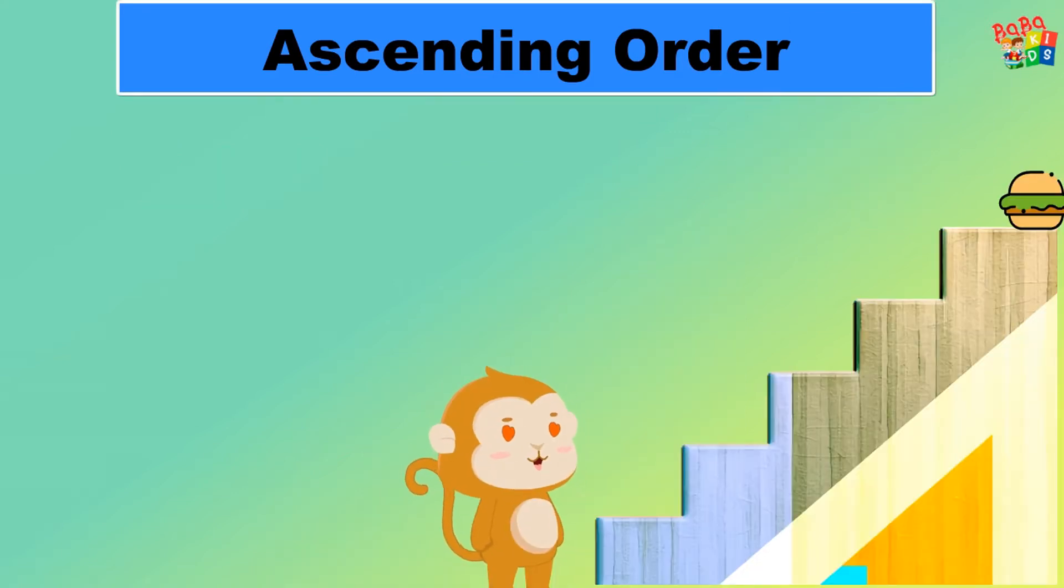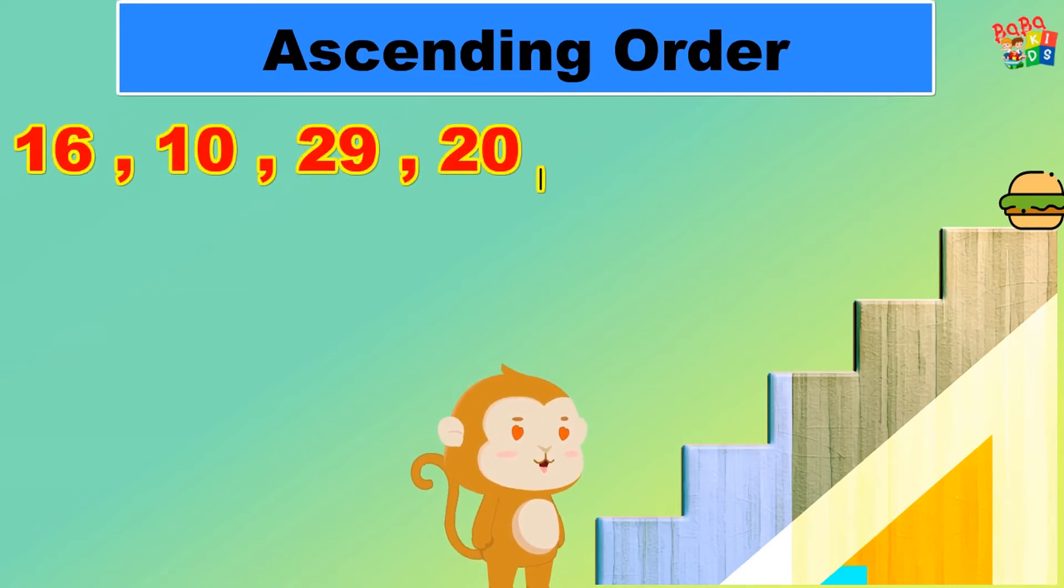Look at these numbers: 16, 10, 29, 20, and 12. They are not in ascending order. Mr. Chiku wants to go up and get a burger. For that, the numbers should be arranged in ascending order. So children, let's all help Mr. Chiku to go upstairs and get his burger among the given numbers.